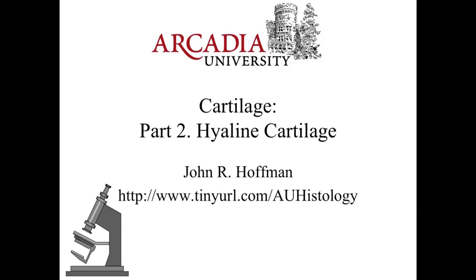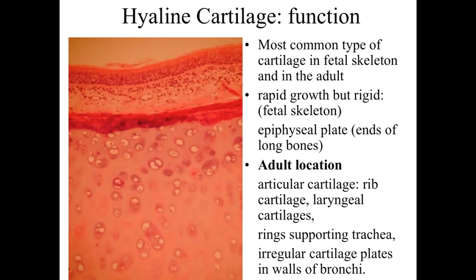Hello and welcome to Arcadia University's BI 327 histology course. This is the second of the three-part series of lectures on cartilage, and in this lecture we're going to focus on the properties and characteristics of hyaline cartilage. Hyaline cartilage is the traditional structure that is the major component of the fetal skeleton and is also found within specific regions in the adult.